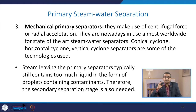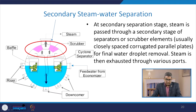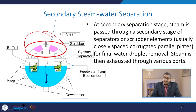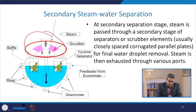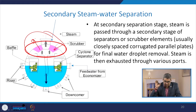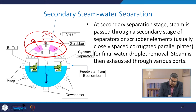Steam leaving the primary separators typically contains too much liquid in the form of droplets containing contaminants. Therefore, a secondary separation stage is also needed. At the secondary separation stage, steam is passed through a secondary stage of separator or scrubber — usually closely spaced corrugated parallel plates — for final water droplet removal. Steam is then exhausted through various ports.